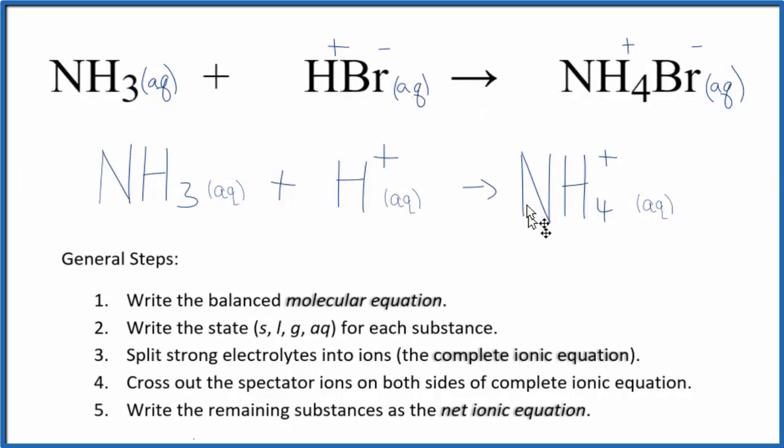So this is the balanced net ionic equation for NH3 plus HBr, ammonia plus hydrobromic acid. You'll notice that we have a positive charge here and then a positive charge here. Charge is conserved. And if you count the atoms up, you'll see that this is a balanced molecular equation as well.